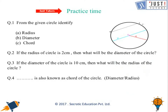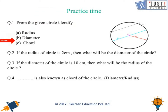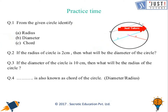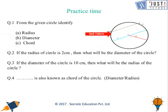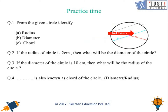We are now at practice time. You can pause the video and try these questions, then check your answers. Question one: from the given circle, identify the radius, diameter, and chord. The red color is the radius, this one is the diameter, and the black one is the chord. Also note that the diameter is also a chord.